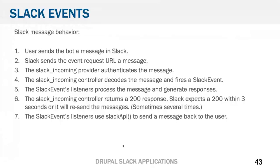When a user sends the bot a message, Slack responds to that event and pushes that event metadata to the URL specified in your event setup. We authenticate and then the controller decodes that message packet, fires off the Slack event, and whatever listeners are listening do their thing. Then as soon as it can, it returns a 200 response. Slack expects that response within three seconds — if it doesn't get a 200 within three seconds, it'll start resending messages, sometimes a bunch of times.